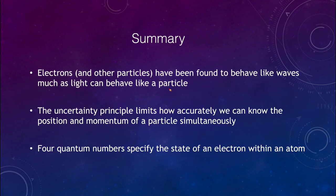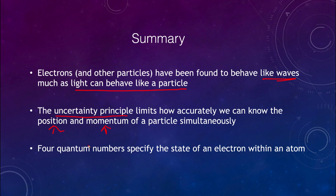In summary: electrons and other particles behave like waves, just as light can behave like a particle — matter has a dual nature. The uncertainty principle limits how accurately we can know the position and momentum of a particle simultaneously. We then looked at the four quantum numbers that allow us to specify the state of an electron within an atom. That concludes this lecture on quantum theory; we'll be back next time for another topic in physical science — have a great day everyone.